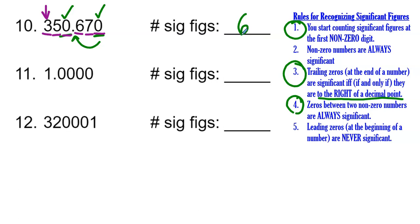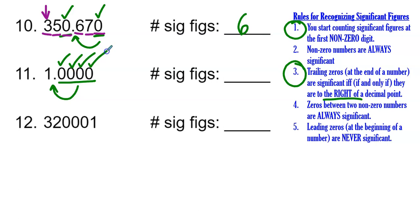Number eleven has no leading zeros and no sandwiched zeros — only trailing zeros. We check rule three: are they to the right of a decimal point? Yes, all these trailing zeros are to the right of the decimal point, so they are all significant. Starting at the first non-zero number, we count: one, two, three, four, five significant figures.